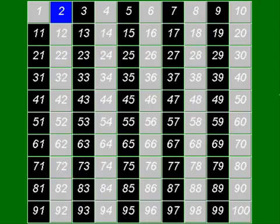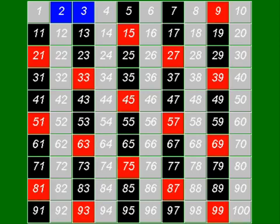The next number, 3, is not divisible by 2, hence it must be a prime number — its only factors are 3 and 1 itself. Now the multiples of 3 are not prime numbers, so we will remove them from the list.